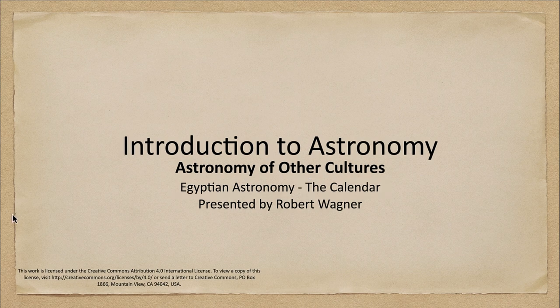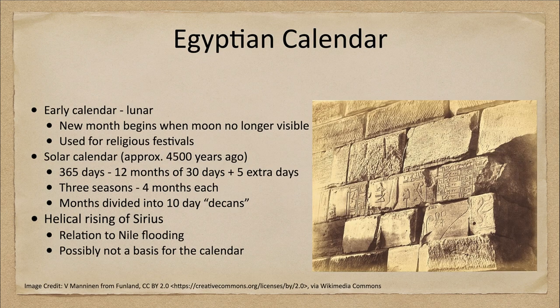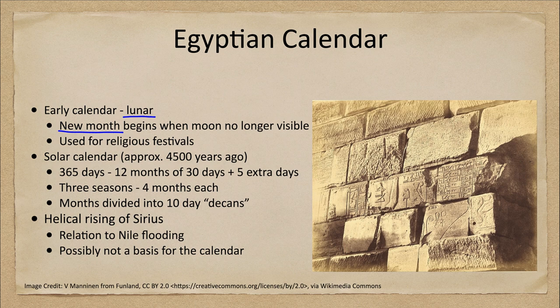The early calendar was what we would call a lunar calendar, based on the moon. A new month begins when the moon is no longer visible. This is a difficult type of calendar to use, primarily because it involves looking for the moon — you actually had to go out and see when the moon was visible and when it was not.